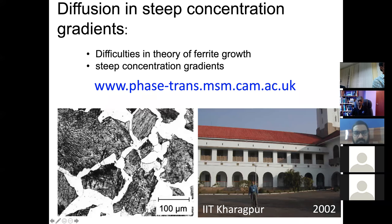The type of ferrite I'm going to talk about is what we call allotriomorphic ferrite. Basically it forms at the austenite grain boundaries and then thickens in directions normal to that.